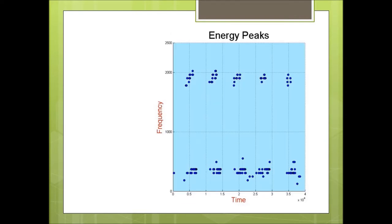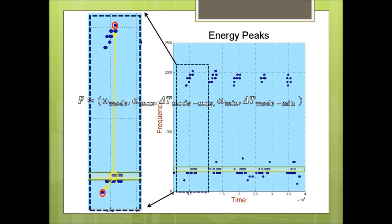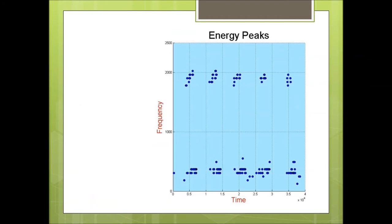We extracted features in two ways. Using the energy peaks, we found the mode frequency. Within a time window, we take peak-to-peak measurements from the mode peaks. Our feature vectors are five-dimensional: frequency of the mode, frequency of the furthest peak, time difference, frequency of the closest peak, and time difference. The second method of feature extraction uses the same peaks from the spectrogram and a type of sound representation called the Mel frequency cepstral coefficients.